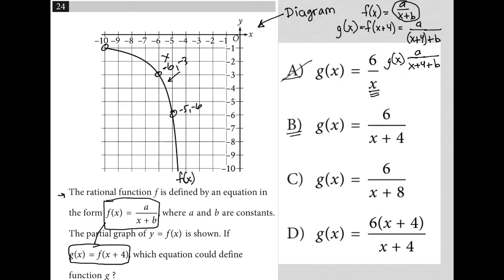For choice b, I have x plus 4, but where's my b value? There should be something else, another constant. We're told a and b are constants. So I really shouldn't have a 4. The 4 should be a larger number once combined with b. So choice b is gone.